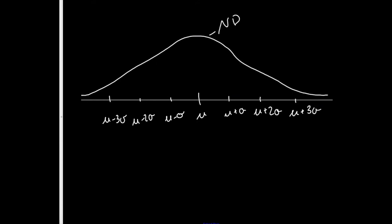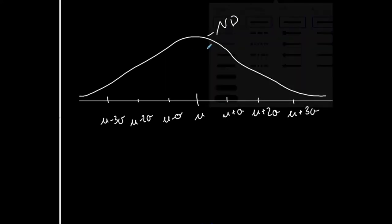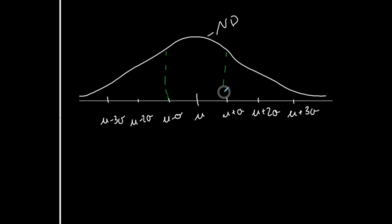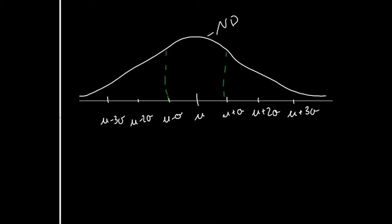So when I use green first, we said within one standard deviation above the mean, or of the mean, 68%, right? 68% of all data values lie between or within one standard deviation of the mean. One below and one above.